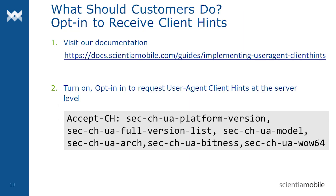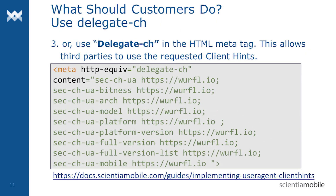So what should device detection users do now? First, visit our documentation at the URL shown here. Second, turn on and opt in to receive user agent client hints at the server level. Your server's response headers must specifically advertise support for user agent client hints using the AcceptCH response header. We recommend that users configure their servers to request all of the user agent client hints.